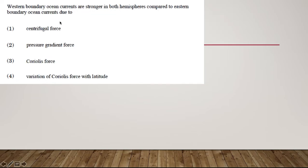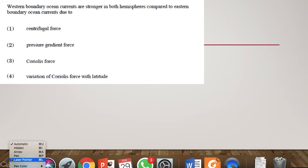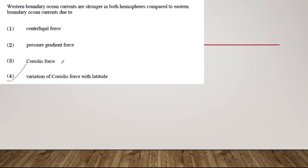Western boundary ocean currents are stronger in both hemispheres compared to eastern boundary currents. What is the reason? The right answer will be four. When current moves from lower latitude to higher latitude, Coriolis force increases. Coriolis force is maximum at poles, minimum at equator. That is the reason why as we move towards higher latitude it gets stronger. There is something called western intensification. On the western side of the ocean we have high intensity currents.